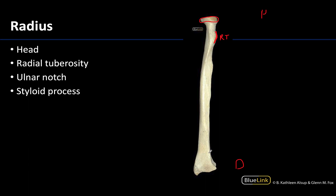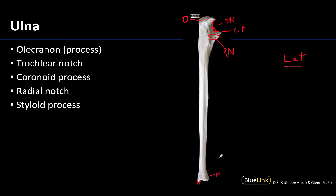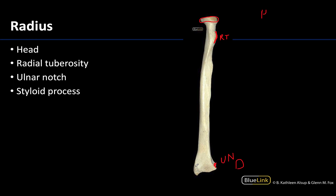Moving to the distal end of the radius, you have the ulnar notch in this region here, on the same side as the radial tuberosity and facing medially — since it articulates with the ulna, which is medial. This accommodates the small head of the ulna. Lastly, there is a prominent styloid process associated with the radius, which is laterally facing and opposite the ulnar notch. The styloid process actually projects more distally than the inferior surface that articulates with the proximal row of the carpal bones.